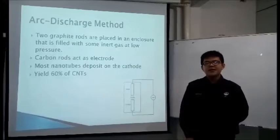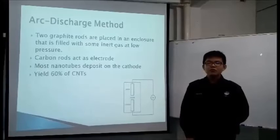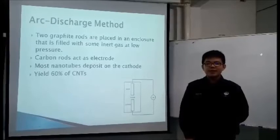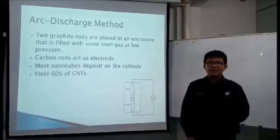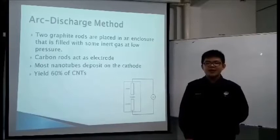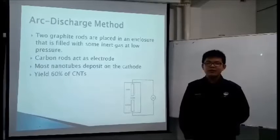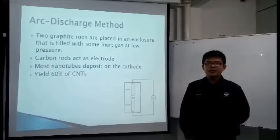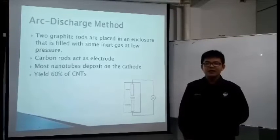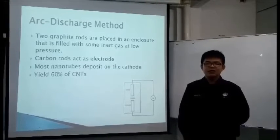The second method is the arc discharge method. Two graphite rods are placed in an enclosure filled with an inert gas like argon at low pressure. The carbon rod acts as an electrode. Most nanotubes deposit on the cathode, and this method can yield 60% of carbon nanotubes.